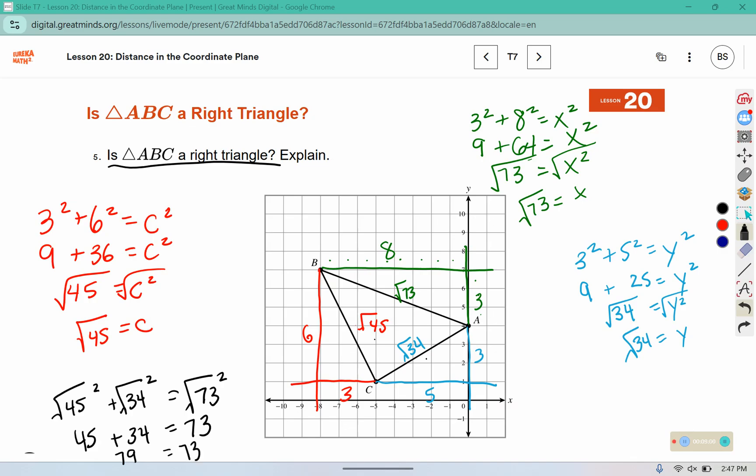Now if I add 45 and 34, that would give me 79. Is 79 equal to 73? No, they are not. So this is not a right triangle because 79 is not equal to 73.